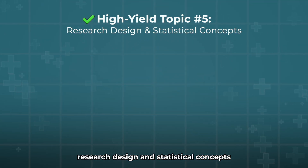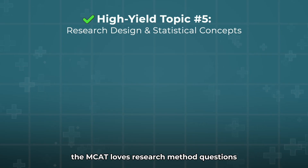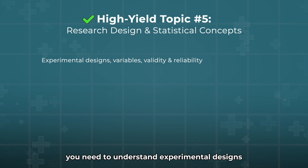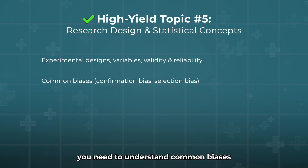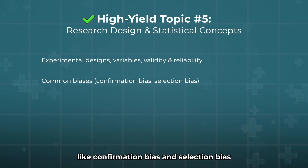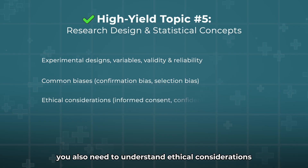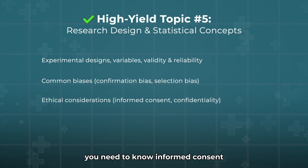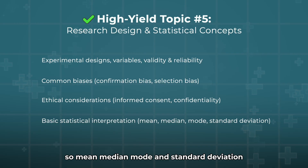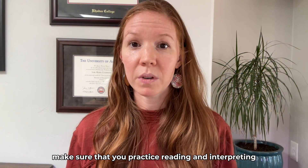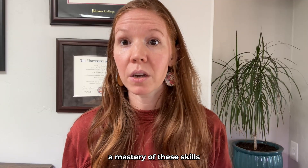High-yield topic number five: research design and statistical concepts. The MCAT loves research methods. You need to understand experimental designs, variables, validity, and reliability. You need to understand common biases like confirmation bias and selection bias, and ethical considerations such as informed consent and confidentiality. You also need to understand basic statistical interpretation: mean, median, mode, and standard deviation. Make sure you practice reading and interpreting MCAT-style research passages to really master these skills.